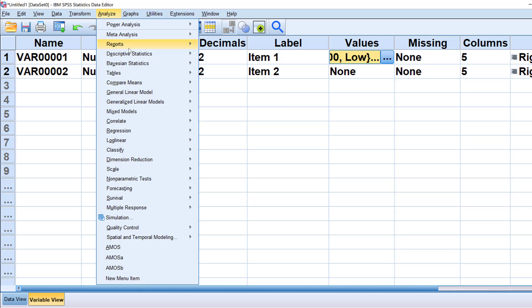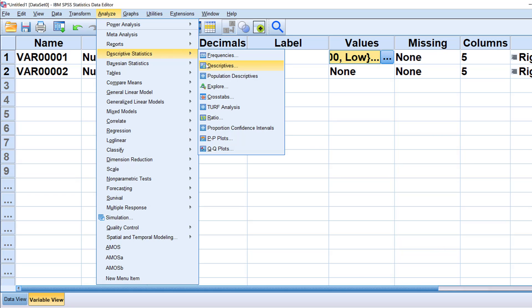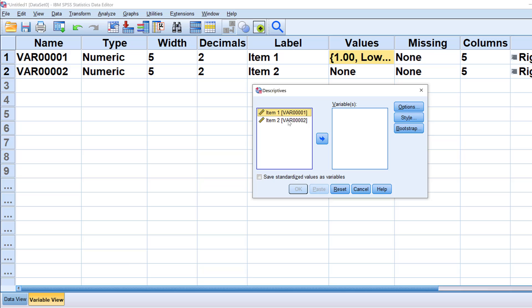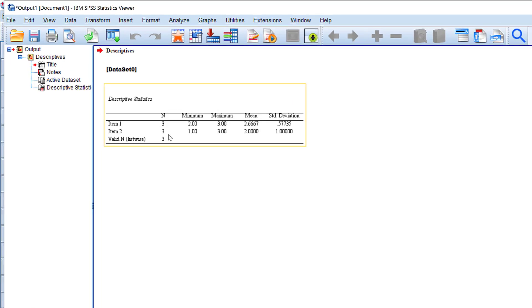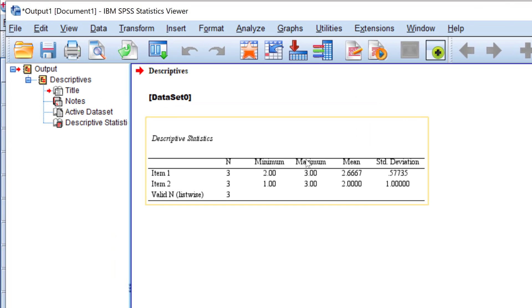Now I go to analyze, then descriptive statistics, then descriptives. I will move these two items here and click OK. Here is the table. It contains the N meaning the sample size, the minimum, the maximum, the range of the Likert scale, and the mean. Based on this mean score, I can give the interpretation. 2.66 corresponds to high degree and 2 corresponds to moderate degree based on the table we used at the beginning to explain this. This is in brief how you can analyze three-point Likert scale and interpret the results using the weighted mean score.